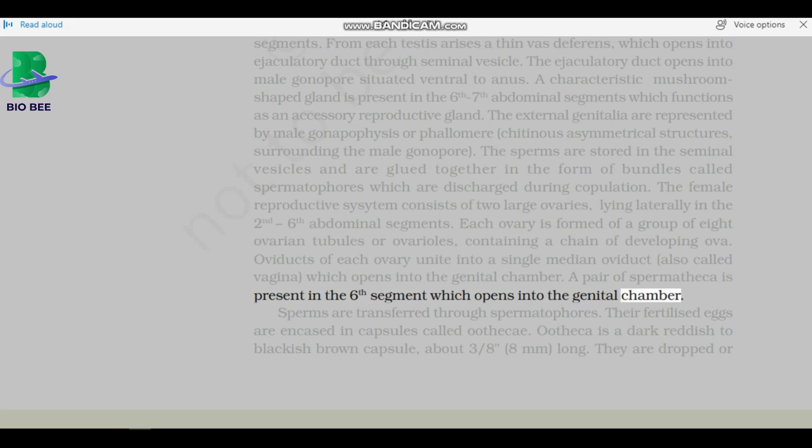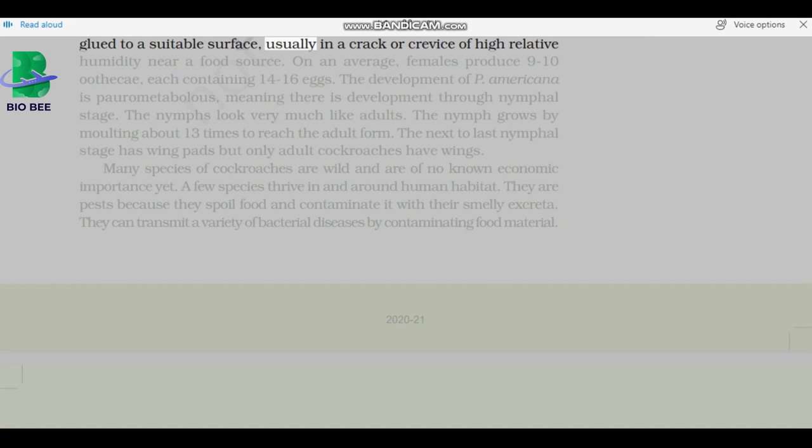Sperms are transferred through spermatophores. Their fertilized eggs are encased in capsules called oothecae. Ootheca is a dark reddish to blackish-brown capsule, about three-eighths inch long. They are dropped or glued to a suitable surface, usually in a crack or crevice of high relative humidity near a food source. On an average, females produce 9 to 10 oothecae, each containing 14 to 16 eggs. The development of P. Americana is paurometabolous, meaning there is development through nymphal stage. The nymphs look very much like adults. The nymph grows by molting about 13 times to reach the adult form. The next-to-last nymphal stage has wing pads, but only adult cockroaches have wings.